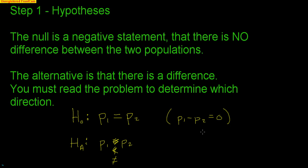Don't forget, you also want to define what P1 and P2 are. For example, P1 is the proportion of Americans that are illiterate, and P2 is the proportion of Canadians that are illiterate. We assume the illiteracy levels are the same between the two, and then the alternative is that one is greater than the other, or that they're just not equal to each other.